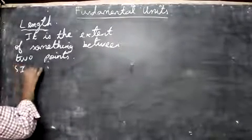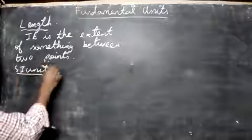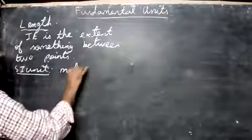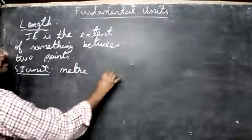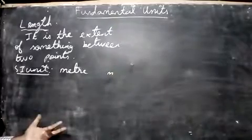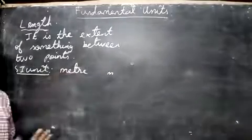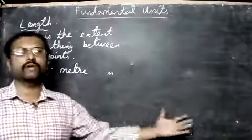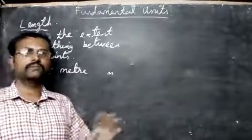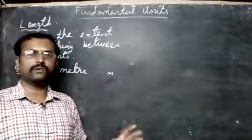We use meter. The symbol for meter is small m. Now let us see what's the meaning of one meter and how to measure it. Usually we say we measure meter with a scale, but if you see, actually we don't measure meter with the scale, we measure it with light.